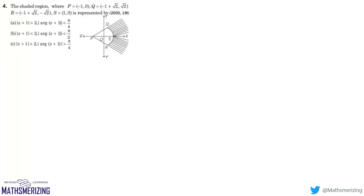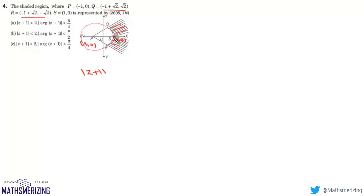The next question asks which conditions represent a shaded region where P = (-1, 0), Q = (-1+√2, √2), R = (-1+√2, -√2), and S = (1, 0). Looking at the circle, all these points lie outside it, so one condition is mod(z+1) > 2, since the radius is 2 units.